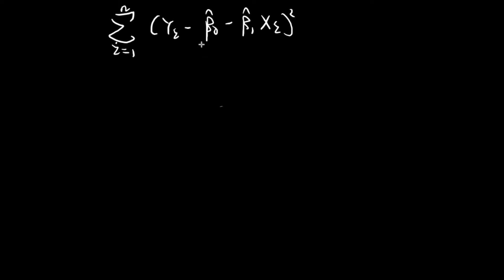In order to obtain the estimates of beta 0 and beta 1, we need to set them to values such that this expression here — the sum of the squares of the residuals — is minimized.